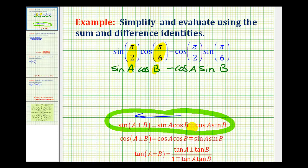Because we're using the subtraction sign here, we'll also use subtraction here. So we have the sine of A minus B. Since A is π/2 and B is π/6, this equals the sine of π/2 minus π/6.